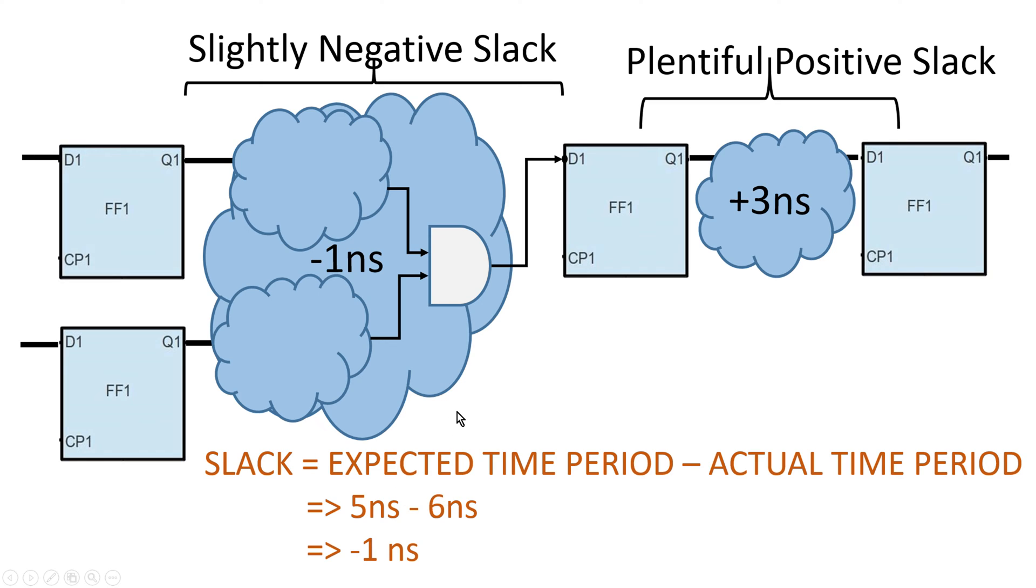Negative slack means circuit is very slow and cannot operate at expected time period. You have to solve this problem and make our circuit work at expected time period. Please consider that delay of this AND gate equal to 2 nanosecond and there is another path adjacent to the critical path having slack of positive 3 nanosecond. Now you can pause my video to think of its solution.